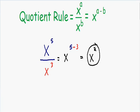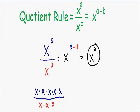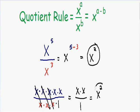Let me show you an illustration to show that the quotient rule makes sense. In our numerator we had x to the fifth, which is just x multiplied by itself five times. In our denominator we had x cubed, which is x multiplied by itself three times. If we simplify this expression, notice how three of the x's cancel out and we're left with two x's in the numerator — x times x, which is just x squared. X squared over one is just x squared.